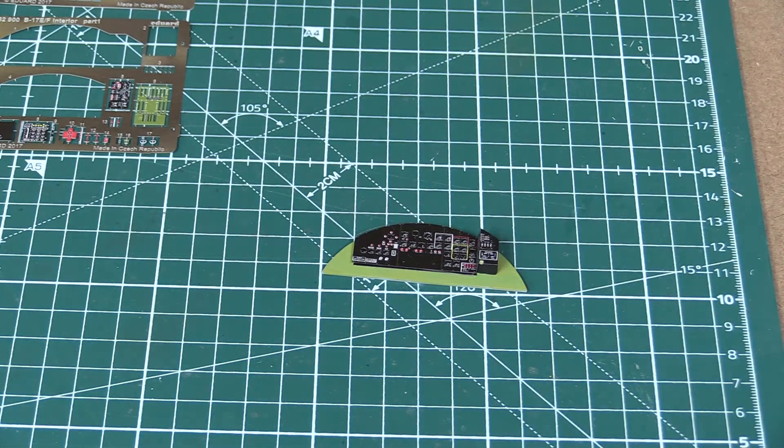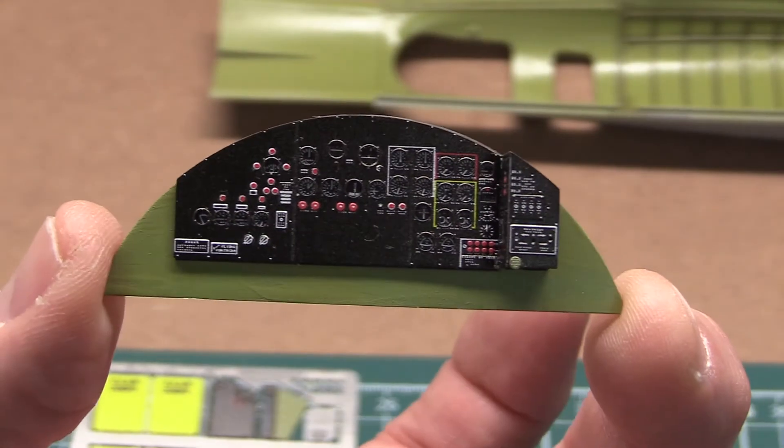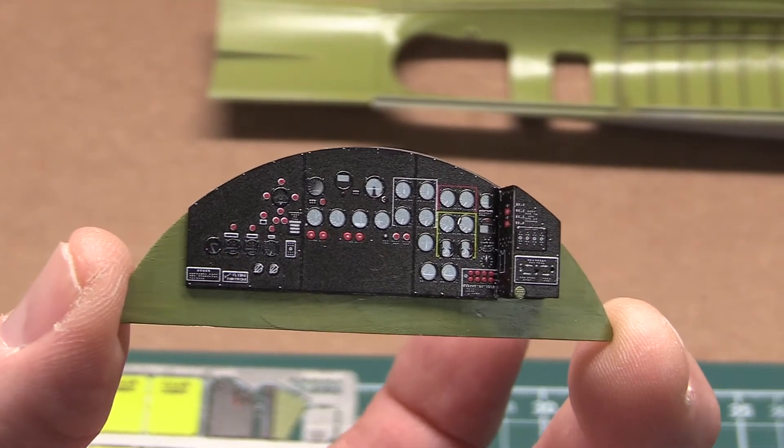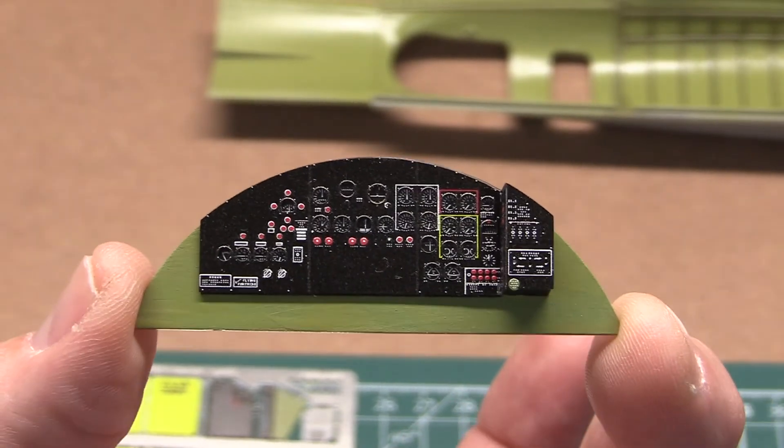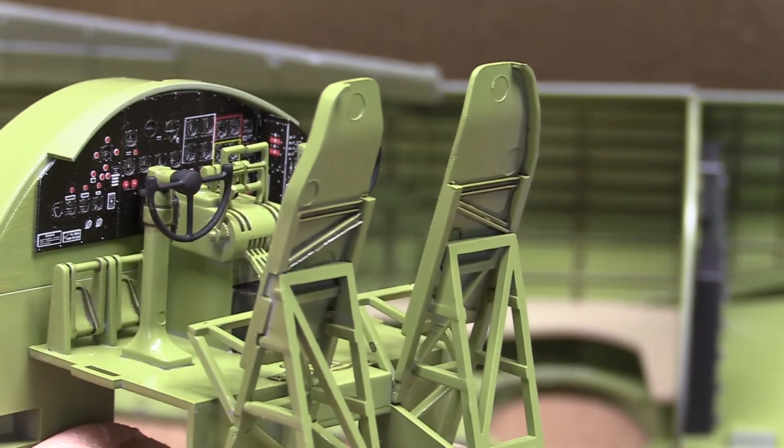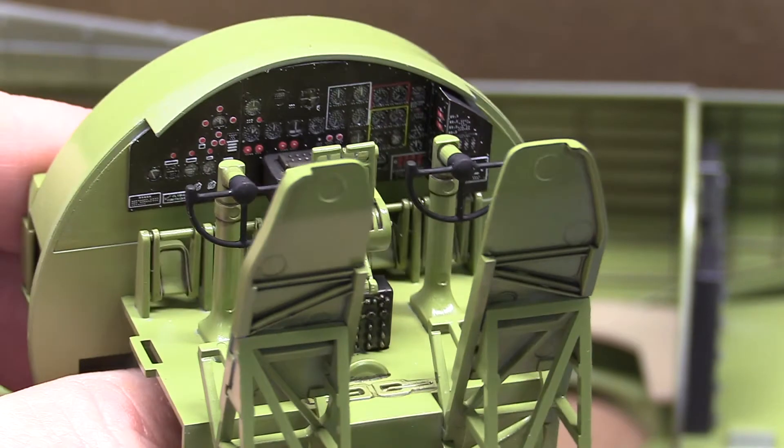Then I'll glue these all together. And as you can see, it creates a beautiful illusion of glass over the instruments on the panel itself. Here's the finished panel installed into the cockpit.